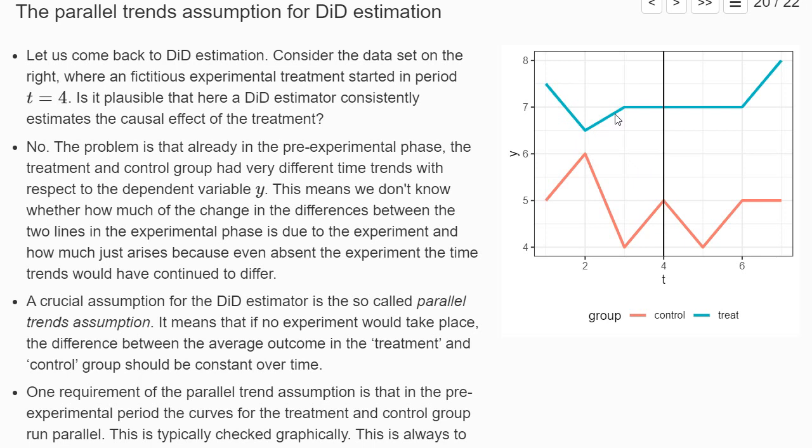Typically this check is done graphically — one looks by eyesight whether the curves run in parallel. In this example, one would say no, the curves don't run in parallel, and then it's not really convincing that the difference-in-differences estimation consistently estimates the causal effect.